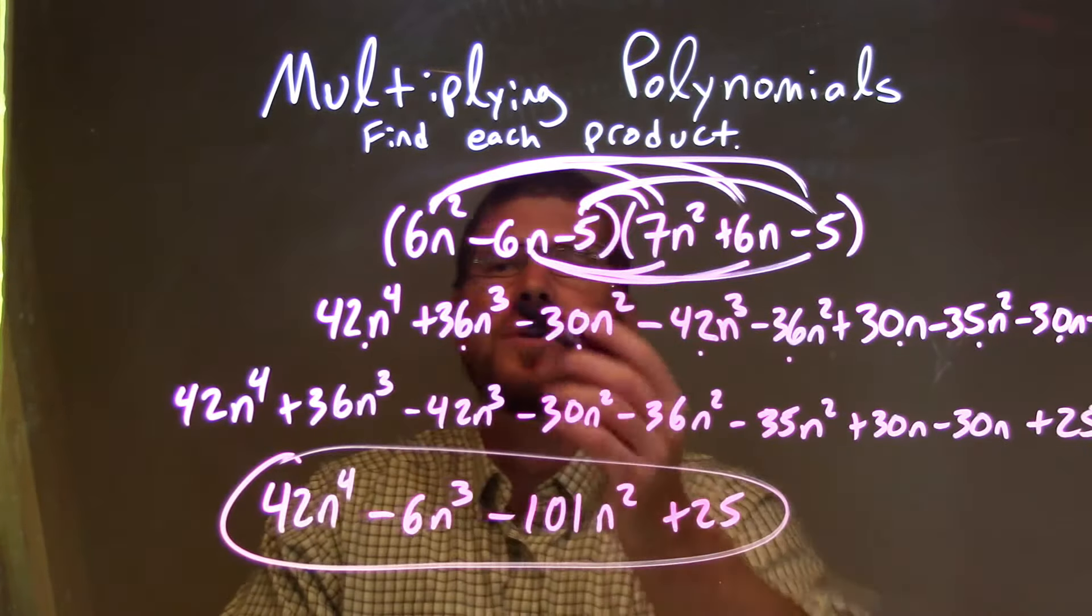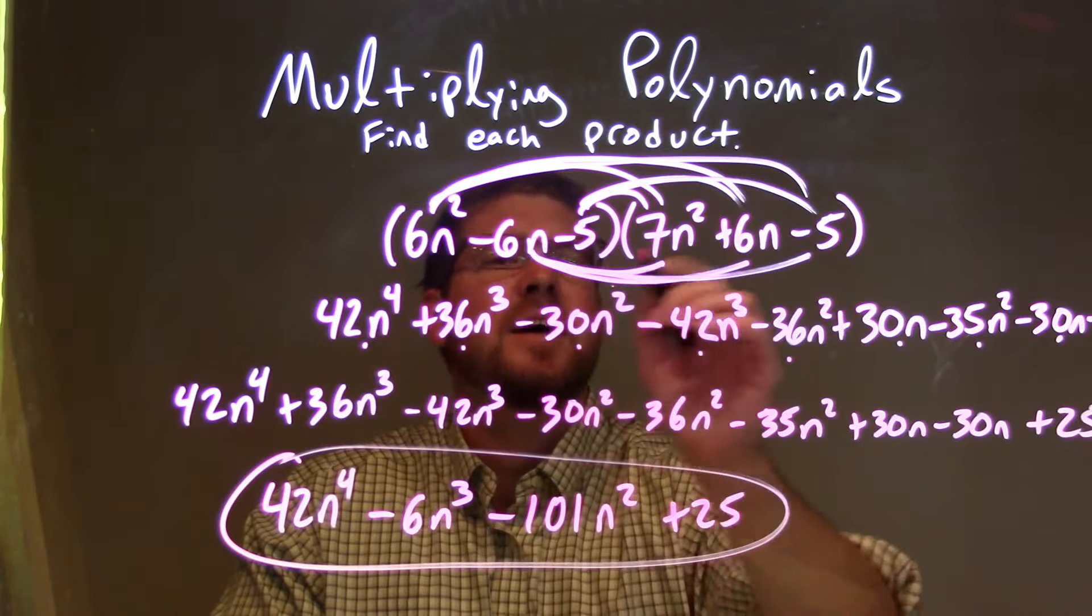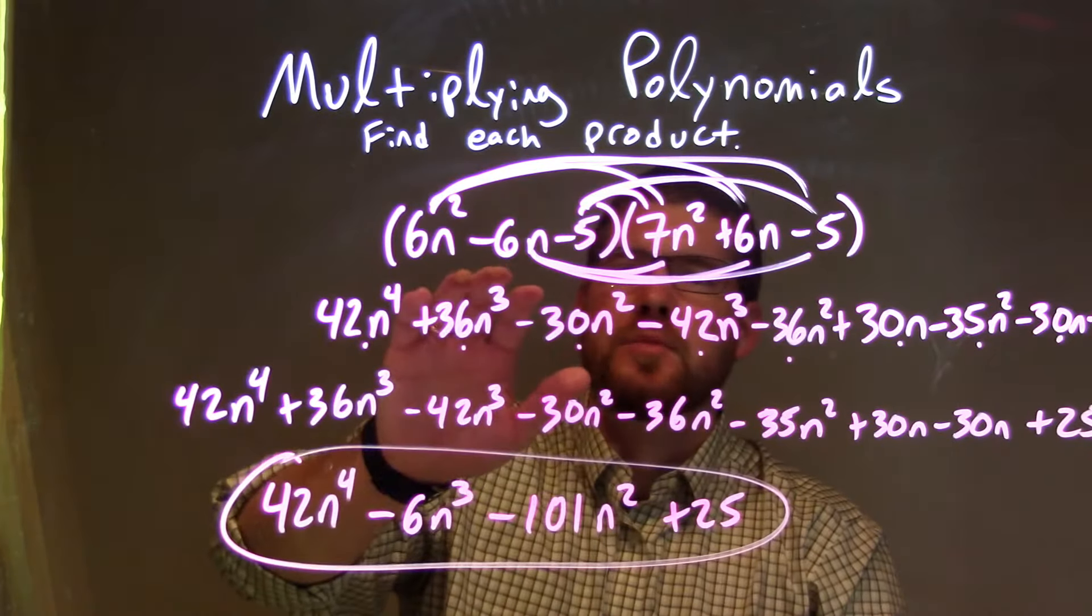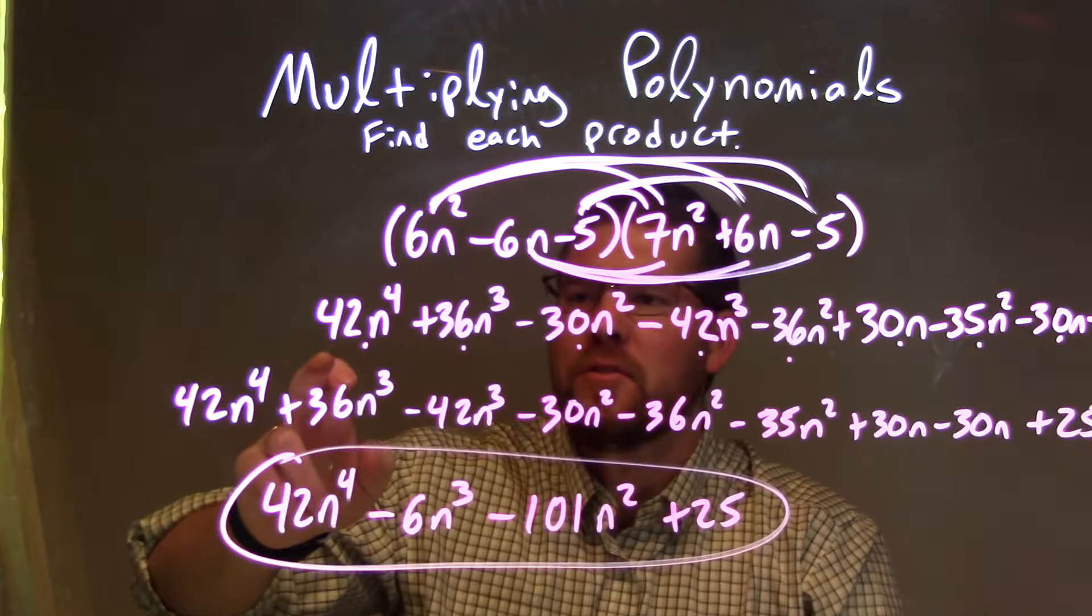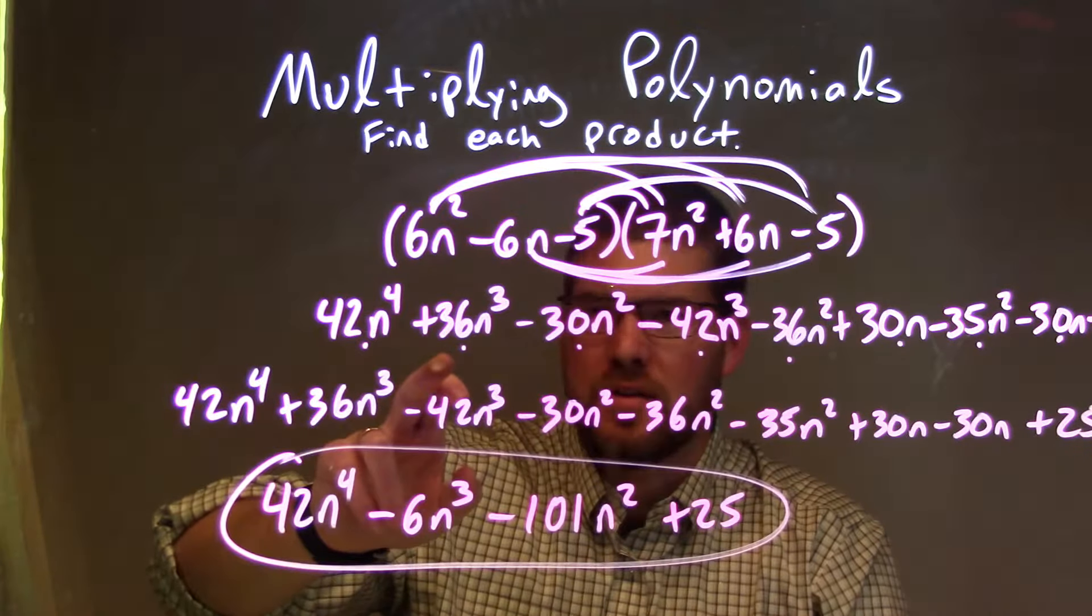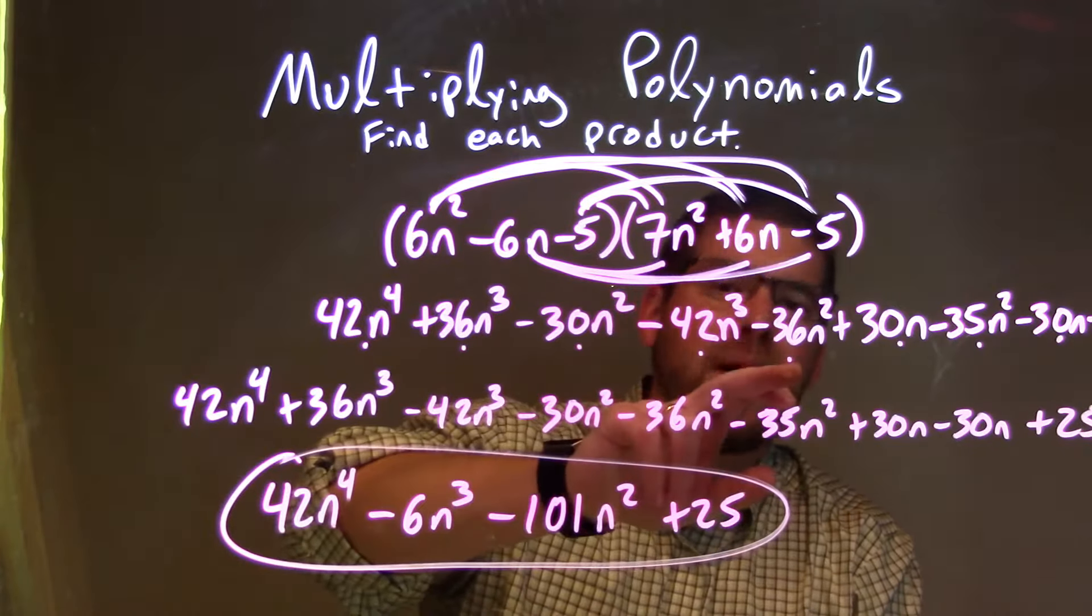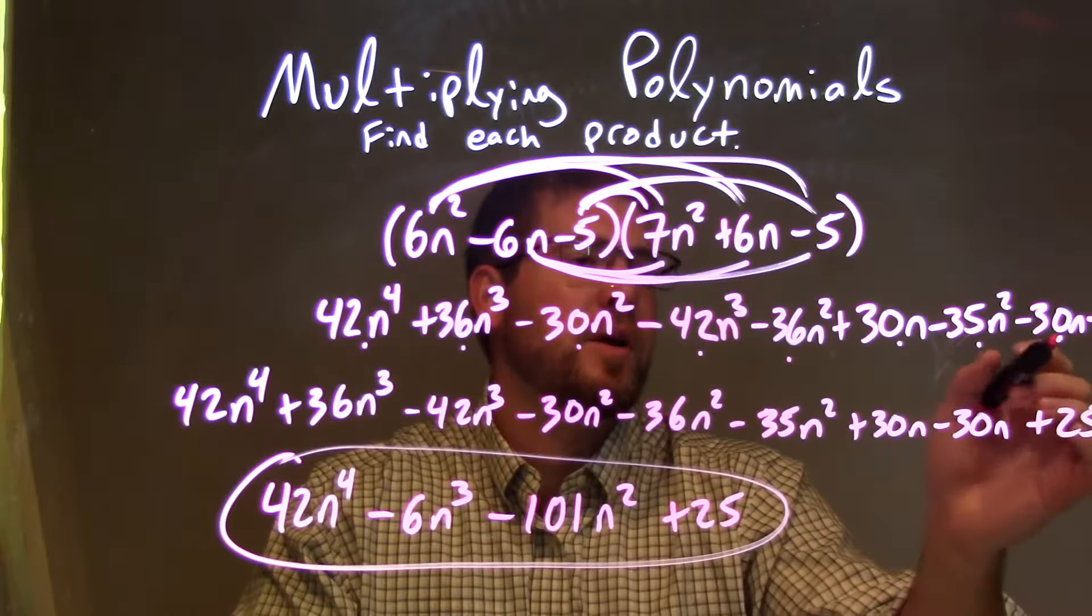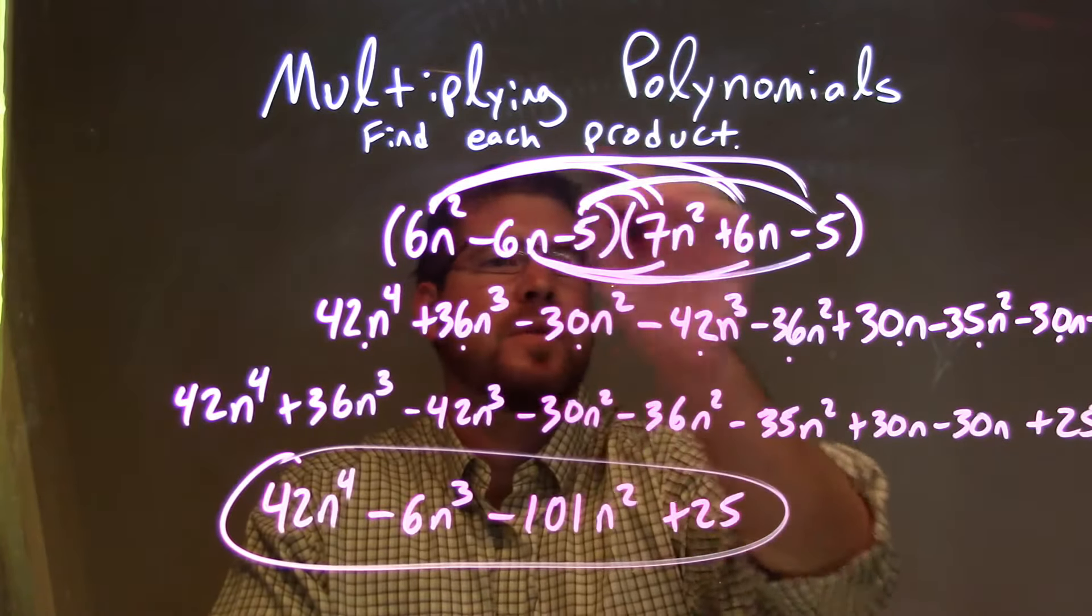So let's recap. We're given our two parentheses to multiply, 6n squared minus 6n minus 5, times 7n squared plus 6n minus 5. All parts of my first parentheses times all parts of my second parentheses. When I distributed them out, I got 42n to the fourth, plus 36n to the third, minus 30n squared, minus 42n to the third, minus 36n squared, plus 30n, minus 35n squared, minus 30n, plus 25. I definitely recommend doing those arcs. They help make sure you got all parts there.